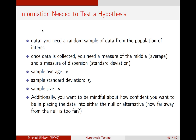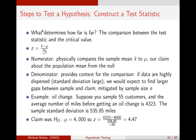You do want to be mindful about how confident you want to be in placing the data into either the null or the alternative. Data are going to differ in how far away from the null they are. The further away they are, the less confident I am that the null is reasonable. As the data move further and further away, I may reject at a 90%, 95%, or 99% confidence. So what determines how far is too far? Comparing the test statistic to a critical value.